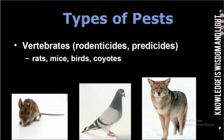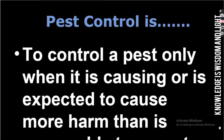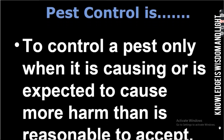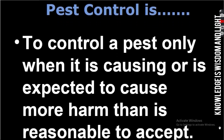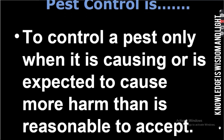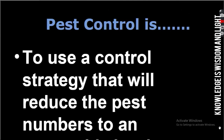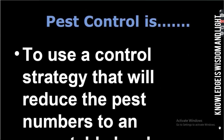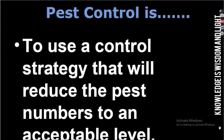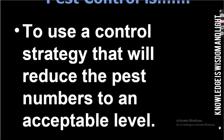Pest control is to control a pest only when it is causing, or is expected to cause, more harm than is reasonable to accept, and to use a control strategy that will reduce the pest numbers to an acceptable level.